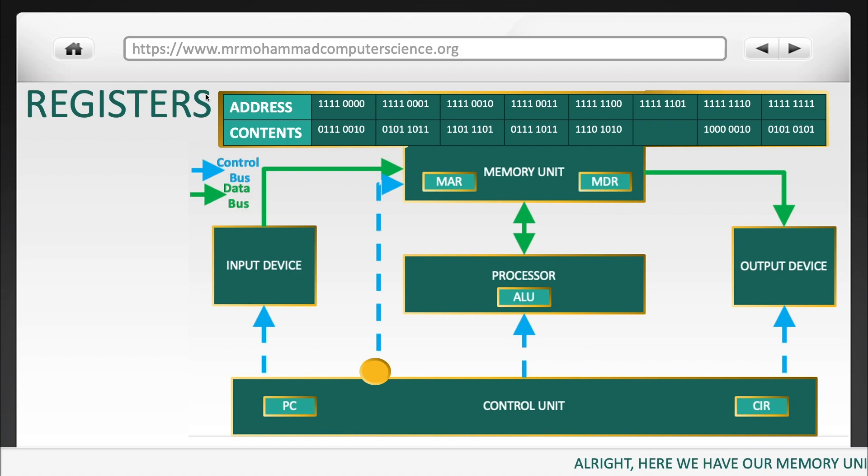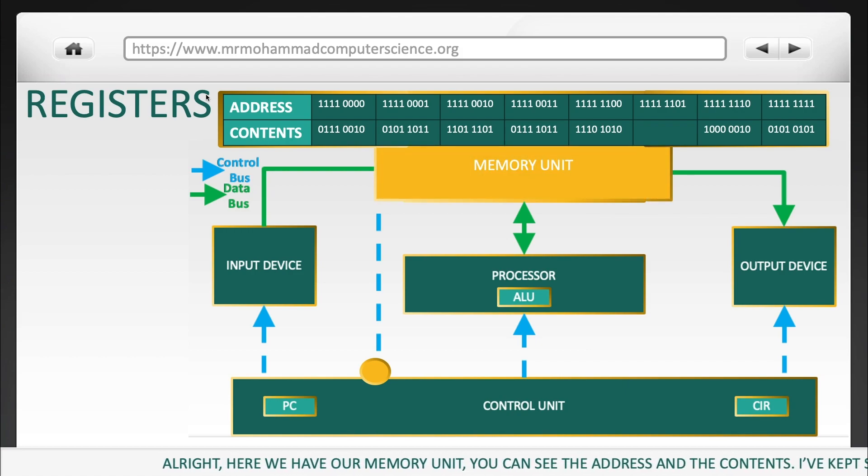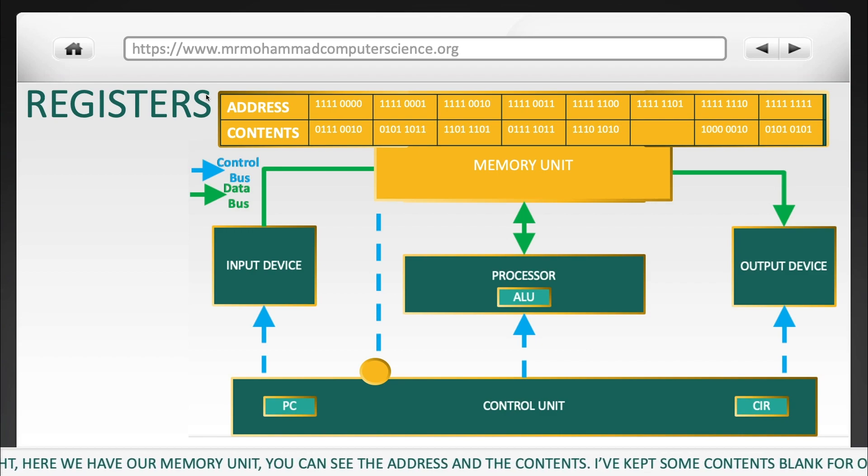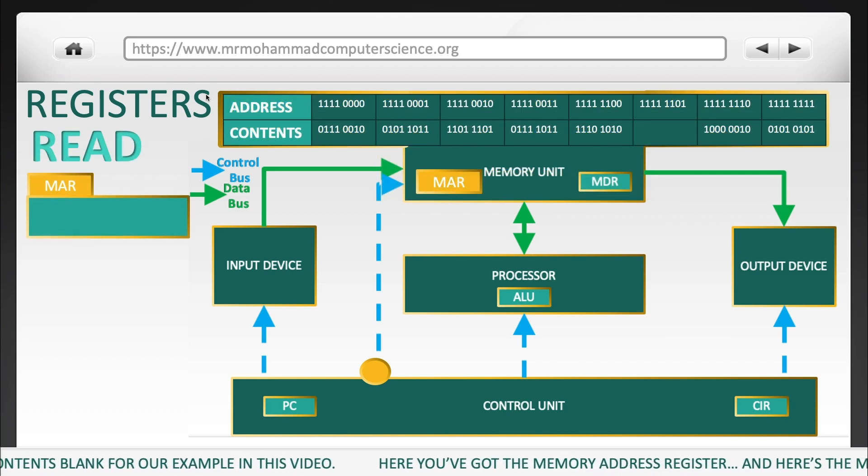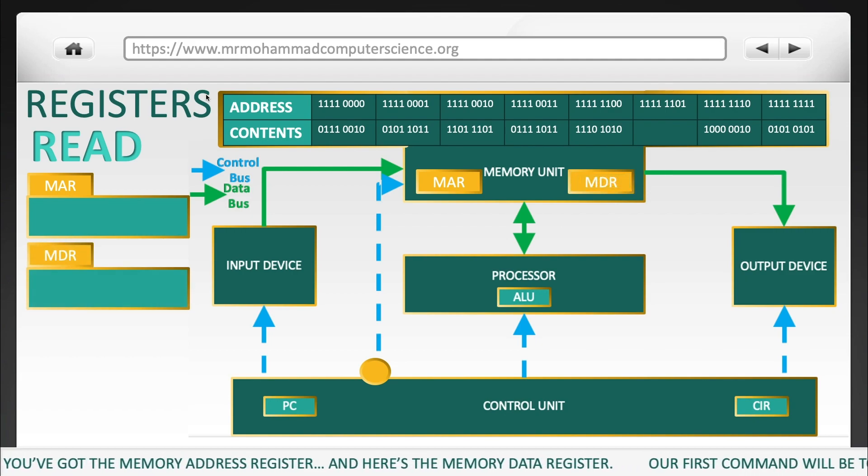All right, here we have our memory unit. You can see the address and the contents above. I've kept some of the contents blank for our example I'm going to do later on. Here's our MAR, memory address register, and here's the MDR, memory data register.